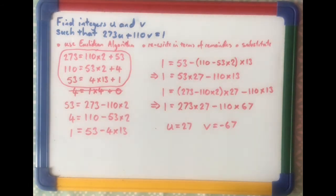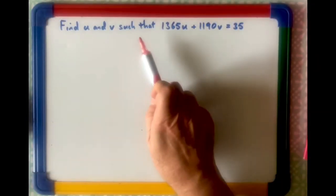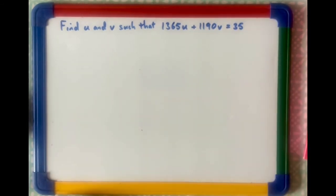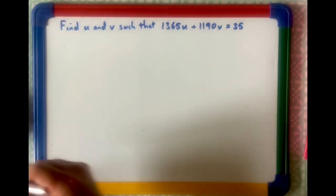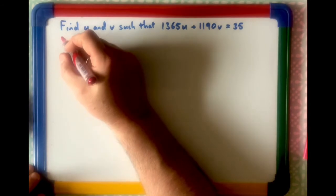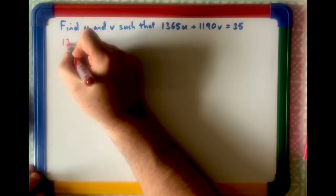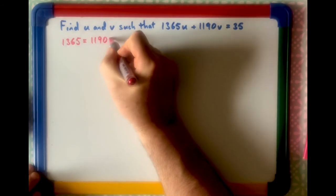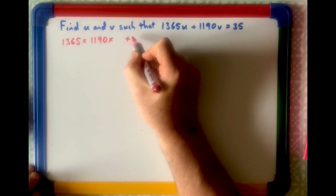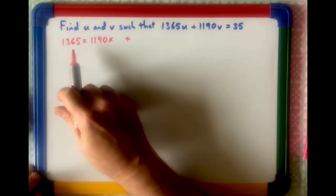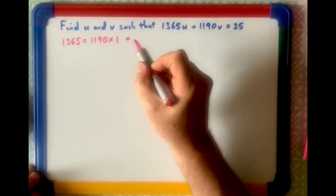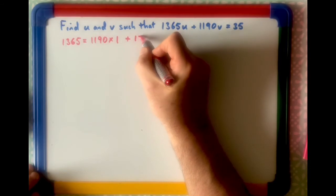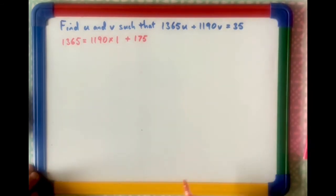I'll go through one more example. Remember, this sort of problem, we always start with the Euclidean algorithm. We start off with 1365 equals 1190 times something plus a remainder. Well, in this case, it's obviously 1, and if you do that, your remainder is 175.